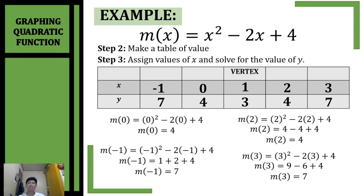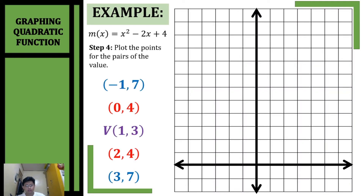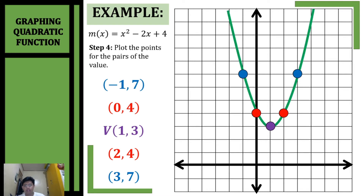Now that we have completed our table of values, it is time to plot our points on the rectangular coordinate system. Let's start with our vertex (1, 3) — it's located here. Then (0, 4), then (2, 4), (-1, 7), and (3, 7). Now that we've plotted all the points, let's connect them by drawing a parabola. That is the graph of our quadratic function x² - 2x + 4.